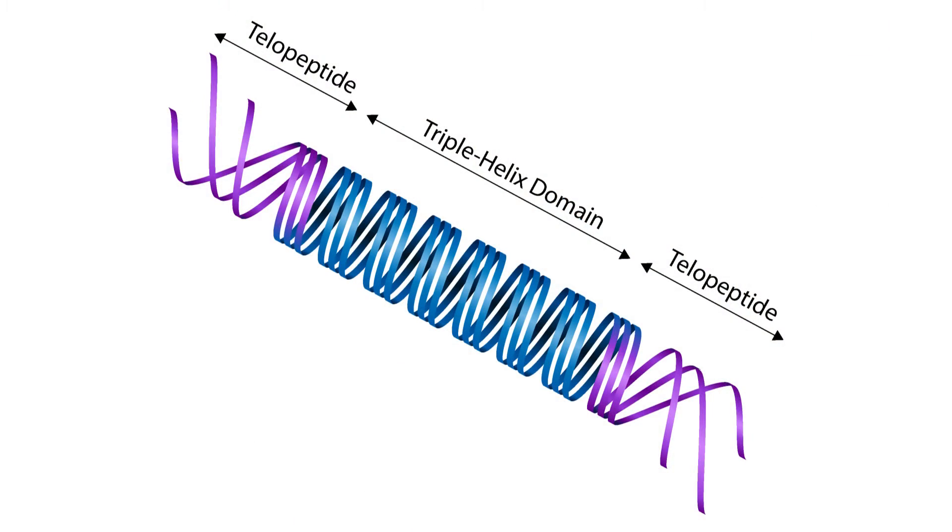When we extract collagen using an enzyme, the enzyme cleaves the telopeptide portion from the collagen molecule. When we extract collagen using acid, the telopeptide portion remains intact.